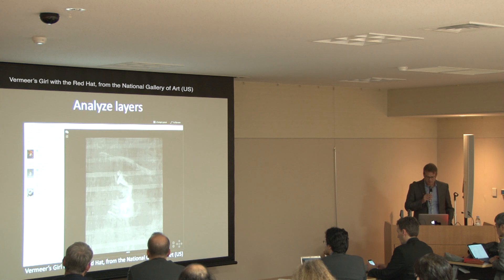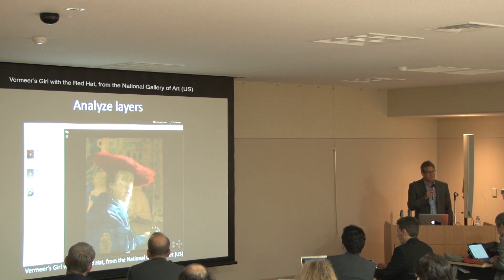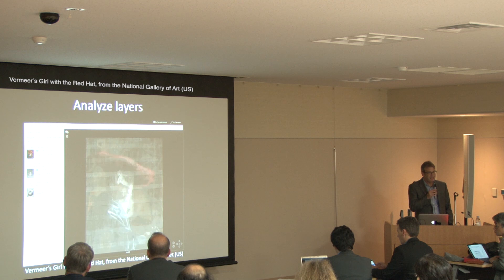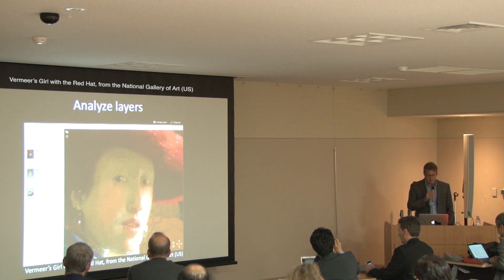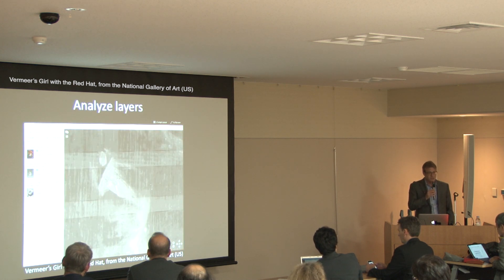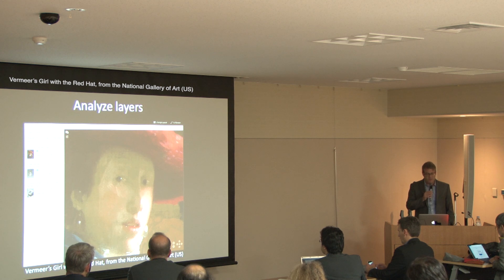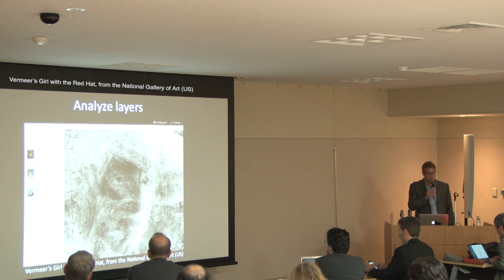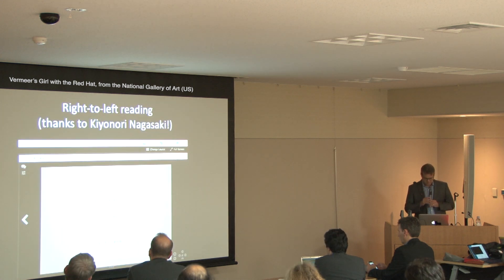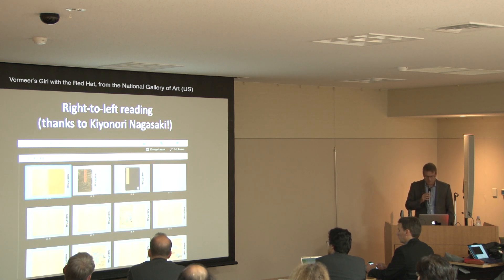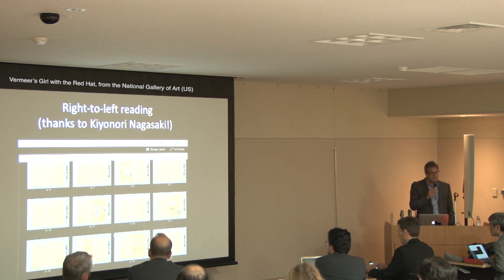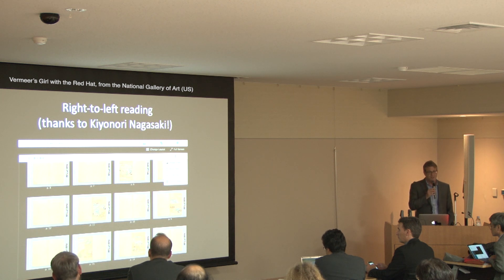One of Mirador's recently added capabilities is displaying different layers of an image captured with different forms of photography. For example, a painting from the US National Gallery of Art captured with traditional photography, x-ray, and infrared — the user can turn layers on and off and change opacity to reveal important features. Mirador now also supports right-to-left reading order in its thumbnail and paging navigation, with thanks to Dr. Kiyonori Nagasaki.